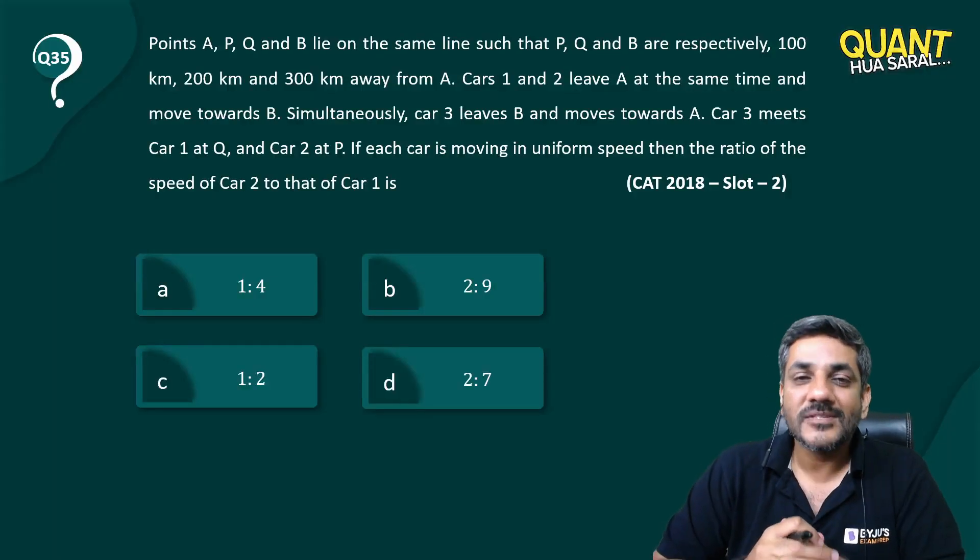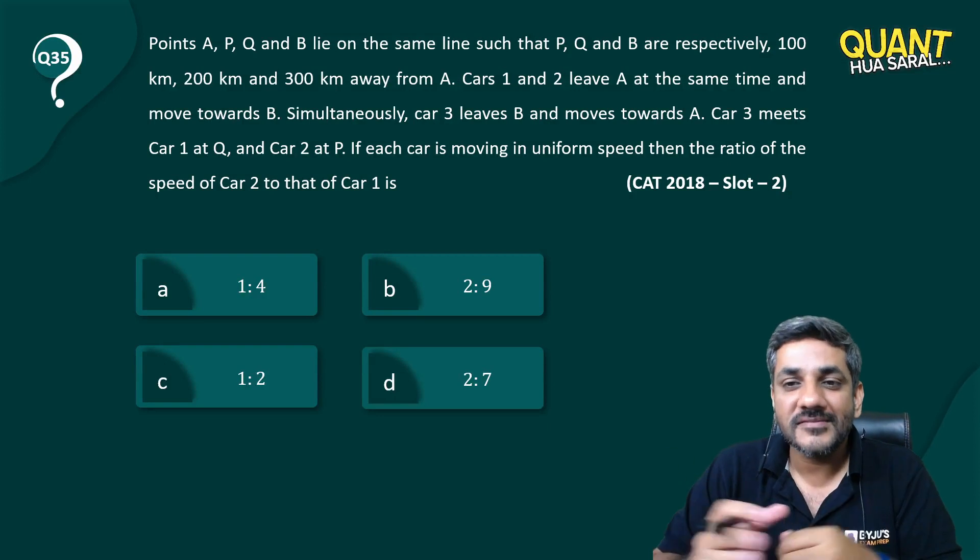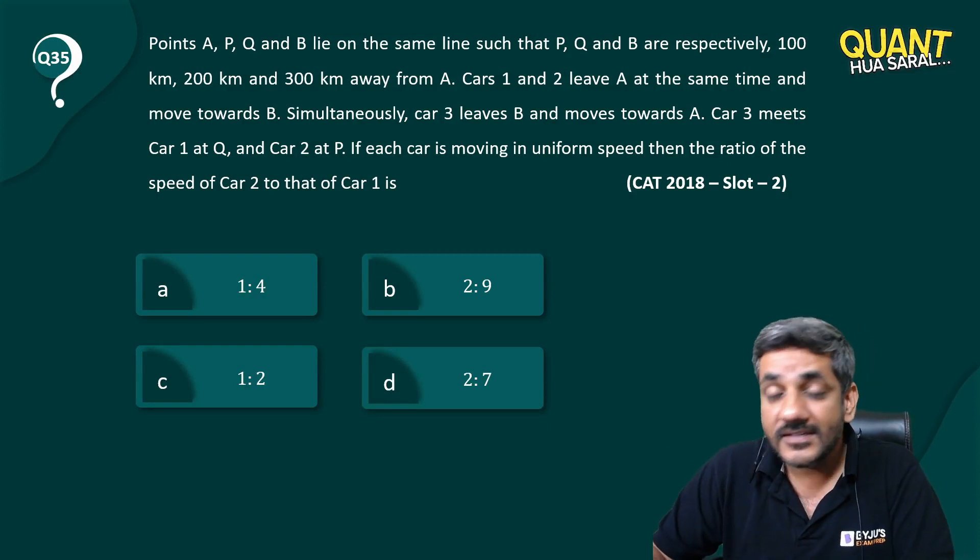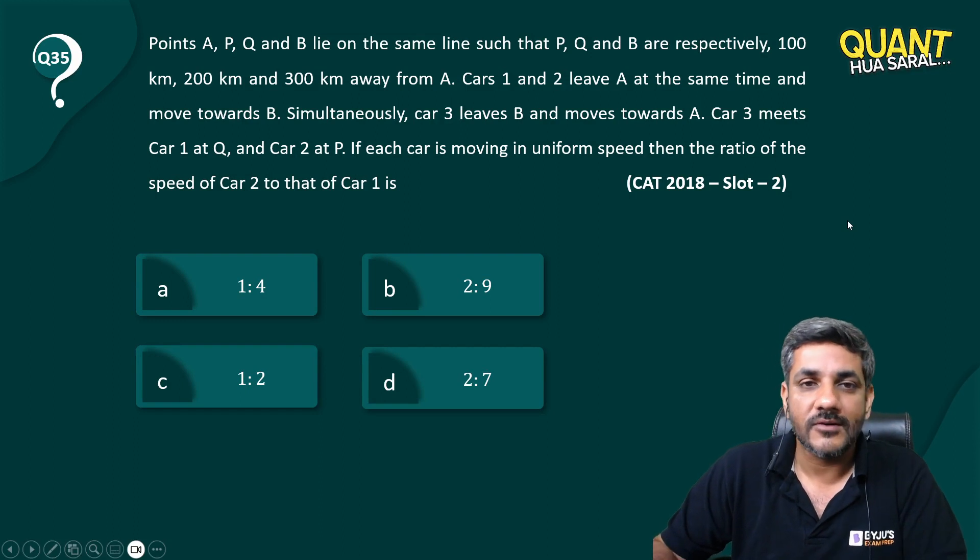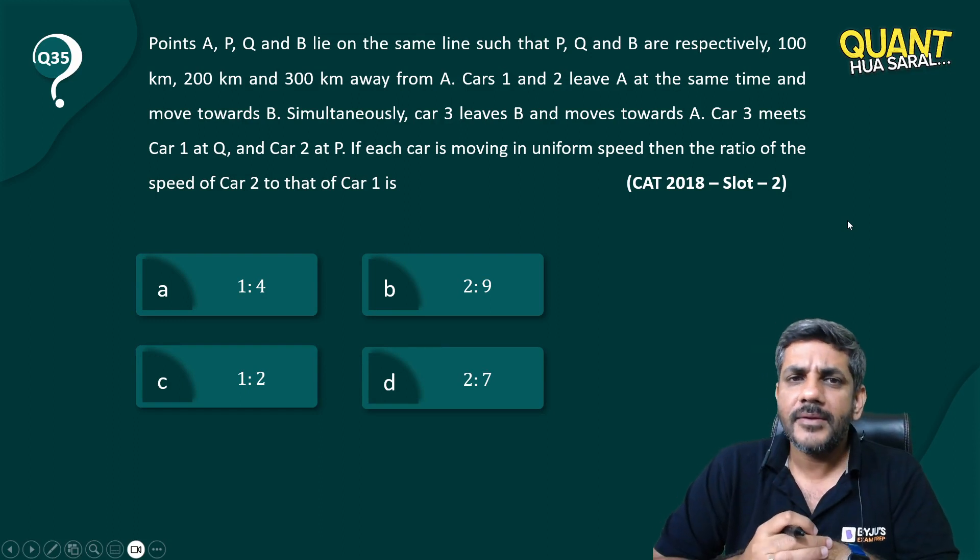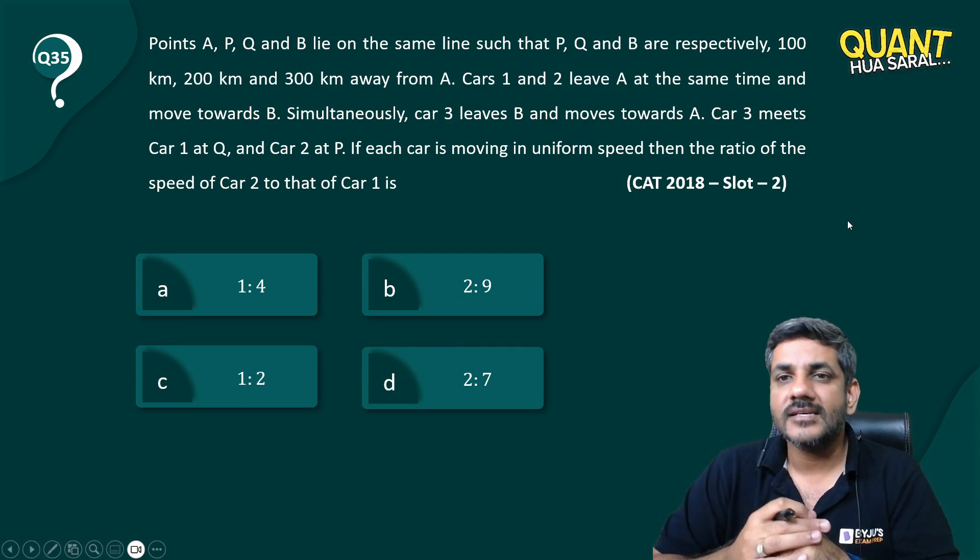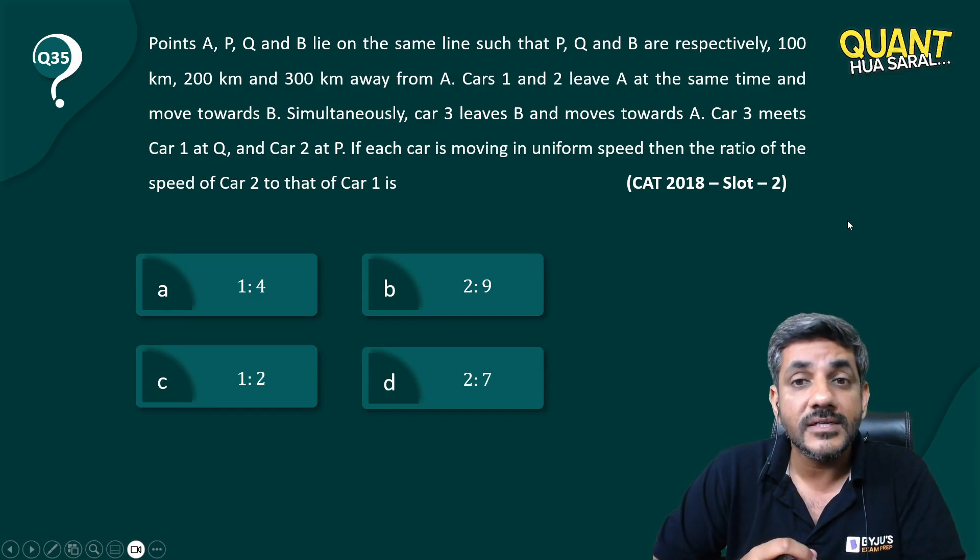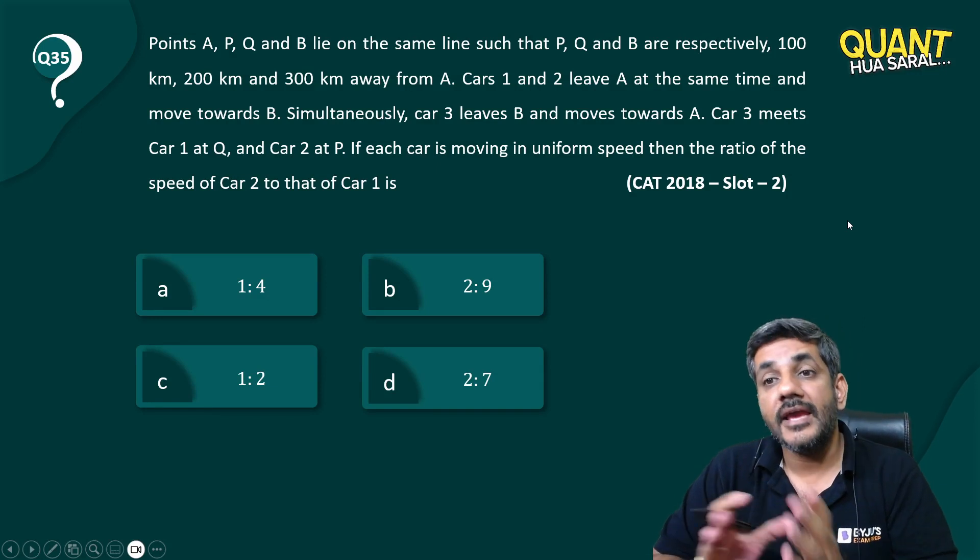Hello everyone, welcome to question number 35. We have started with CAT 2018 questions. Here is the first question from Slot 2 of 2018. Points A, P, Q, and B lie on the same line such that P, Q, and B are respectively 100, 200, and 300 kilometers away from A. Cars 1 and 2 leave A at the same time and move towards B.